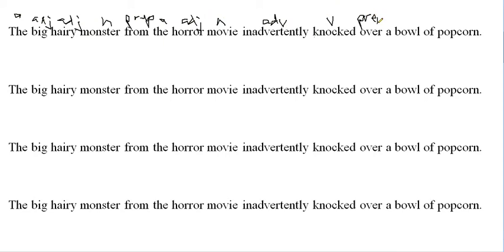'Over' is a preposition, 'of' is an article, 'bowl' is a noun, 'of' is another preposition, and 'popcorn' is a noun.